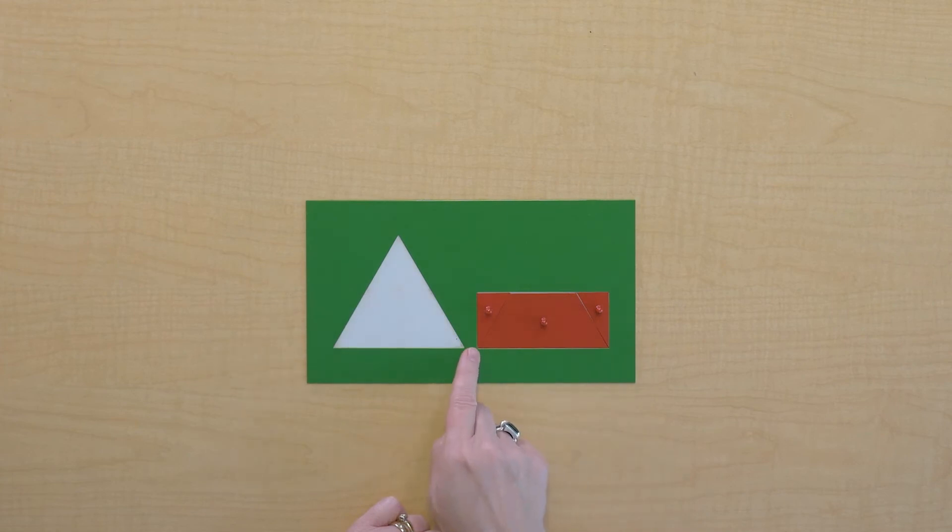I can see the height of the rectangle is half the height of the triangle.